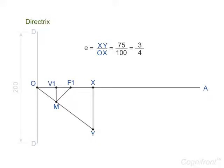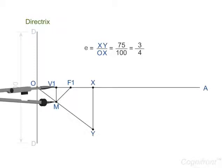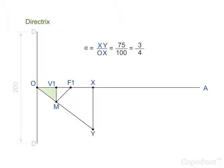V1 is one of the vertices of the ellipse. Observe that in the triangle MV1F1, MV1 is equal to V1F1 and triangle OV1M equals to OXY. XY by OX is equal to 3 by 4. F1V1 by OV1 is equal to 3 by 4.